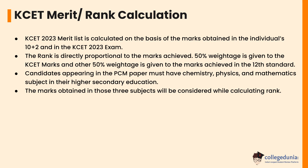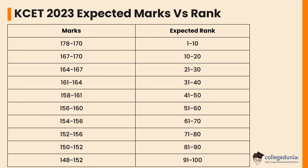Let's check the KCET 2023 expected marks versus rank. For expected marks of 170–178, the expected rank is 1 to 10. For marks of 167–170, the expected rank is 10 to 20. For marks of 164–167, the expected rank is 21 to 30. For marks of 161–164, the expected rank is 31 to 40.